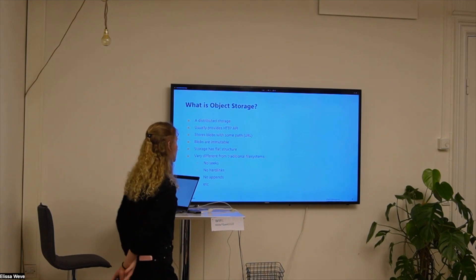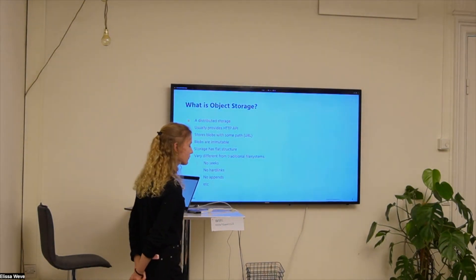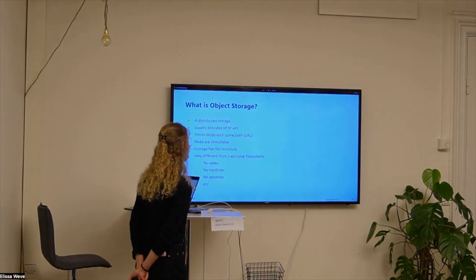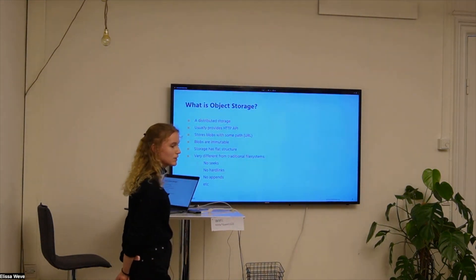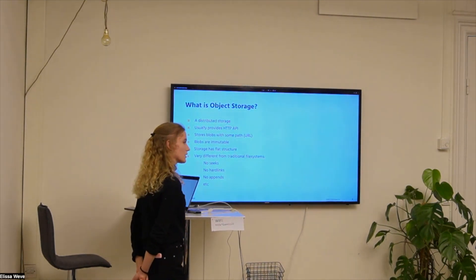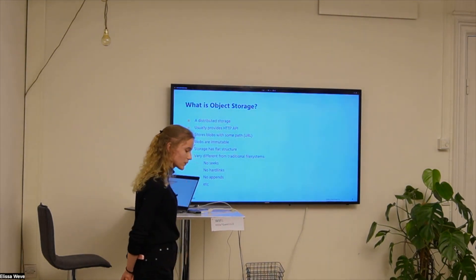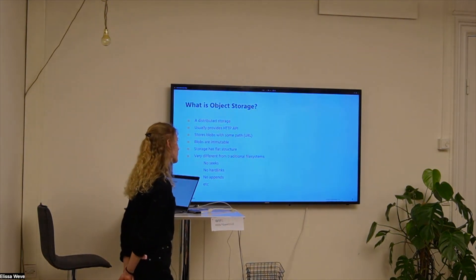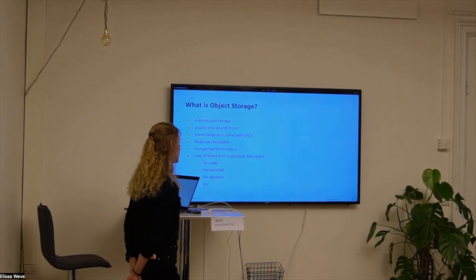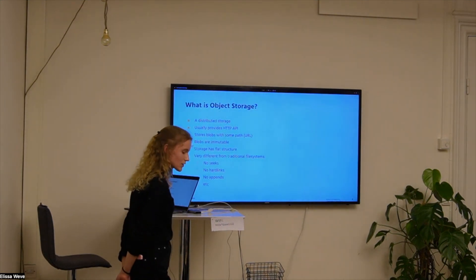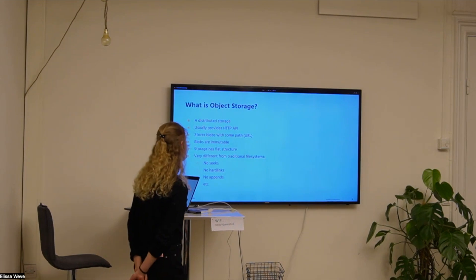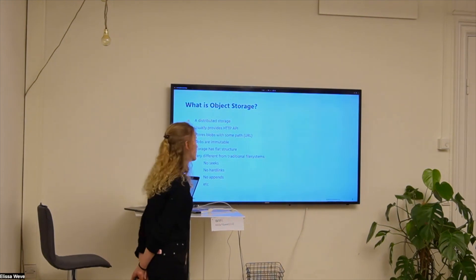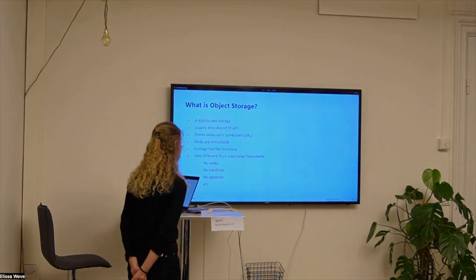Let's first explain what object storage is. Object storage is a distributed storage. It usually provides some HTTP API, and inside it there are objects which are called blocks, and they have some paths. They are also immutable. The storage itself has a flat structure, and it is very different from traditional file systems — there are no symlinks, no hard links, no appends, and so on.